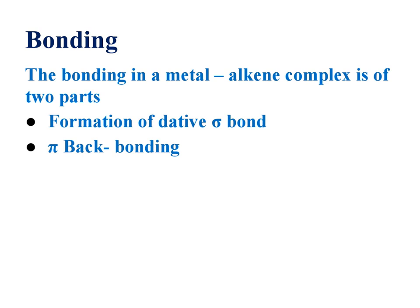To explain bonding pattern in metal alkenes, we are taking a model called Dewar model. Dewar explains the bonding in alkene complexes, such as Zeise's salt, based on MOT theory, molecular orbital theory.